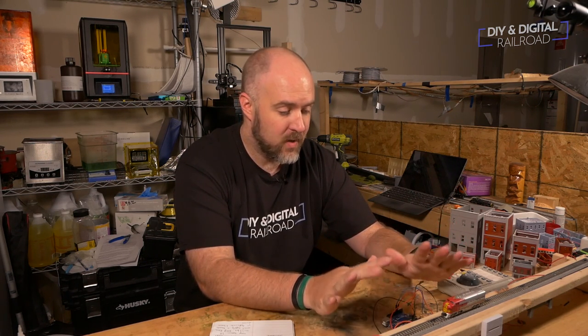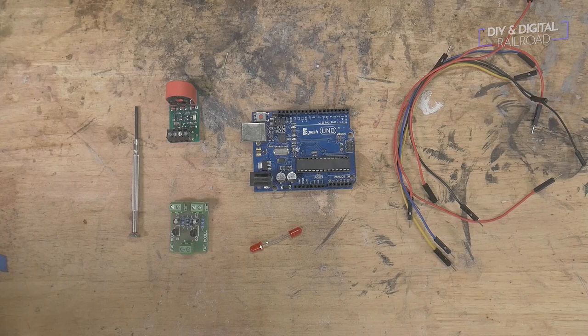So today we are doing more current sensing Arduino projects, and we are doing a grade crossing signal. So the little flashing signals, we're going to do an automated one of those with an Arduino and an NCE BD20. So let's go ahead and get started.